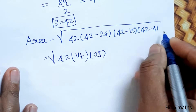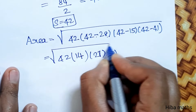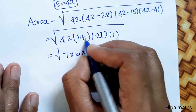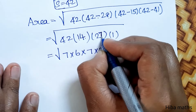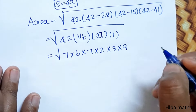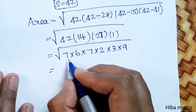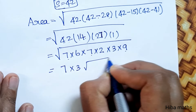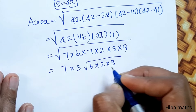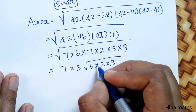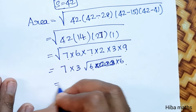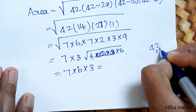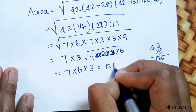Now we simplify the expression under the root. 42 equals 7 times 6, 14 equals 7 times 2, 27 equals 3 times 9. Splitting to remove the root: 7 times 7 gives 7, 9 gives 3, and the remaining factors give 6 into 2 into 3 equals 6. So the area equals 42 into 3, giving area equal to 126 meter square.